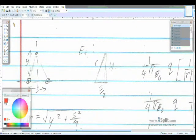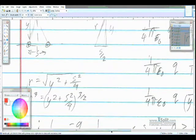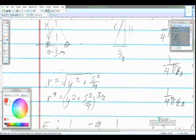So here we go with our triangle. We have the distance y, we have s over 2 because it's half that distance, and we have r here as the hypotenuse. So we can solve for r using the Pythagorean theorem, and we get the square root of y squared plus s squared over 4.